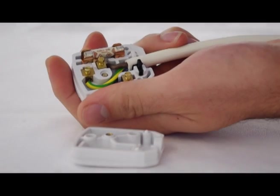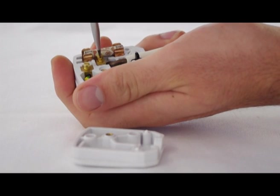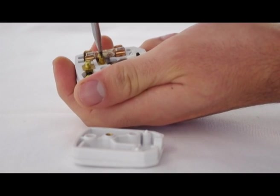From here you'll notice that you have a fuse, live wire, earth wire and neutral wire. Now to remove these wires there's three screws holding each of them in place.